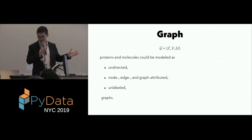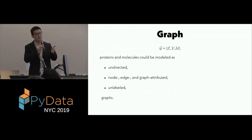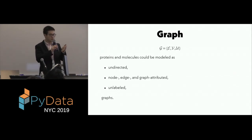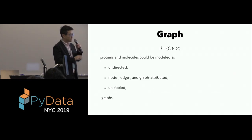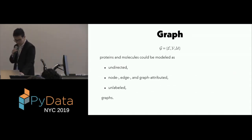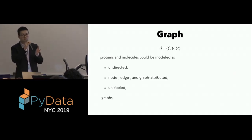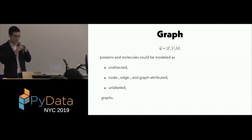So we model the proteins and molecules as undirected, node and edge, and graph-attributed, and unlabeled graphs. We need to model this as an undirected graph, because there's always a mirror symmetry plane in all of the chemistry bonds you have in your proteins and molecules with very few exceptions. And we use unlabeled graph, because if you use a labeled graph, then you need to choose the set of labels you put on each node, which breaks the invariance.